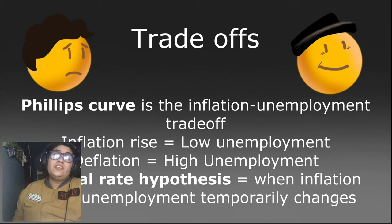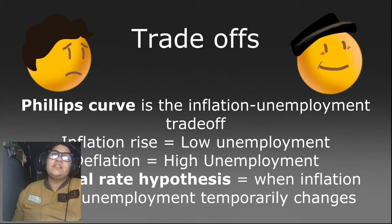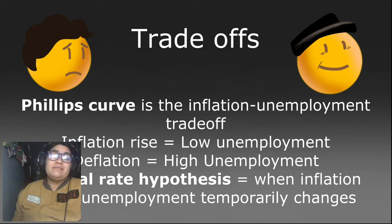There's a natural rate hypothesis where in the short run, inflation and unemployment can change. But in the long run, unemployment is going to stay the same. The natural rate is just going to return — it's going to balance out.